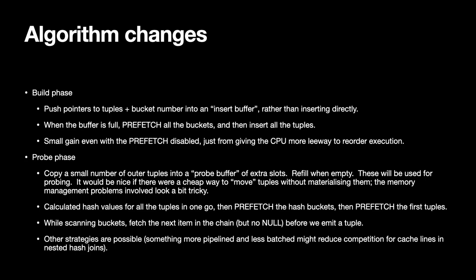Once you have a whole list of tuples you know you're going to insert — you have the pointers, you know the buckets — you can prefetch the bucket headers, and then insert them and it goes faster. One reason for going from 4.2 to 4.0 seconds is just that rearrangement of code, because the CPU is now able to reorder things — it doesn't have dependencies on values that haven't been computed yet. Then once you add prefetching, it won't miss when you actually do the insertion. That's the build side — relatively simple, and I did that bit first, actually more than a year ago.